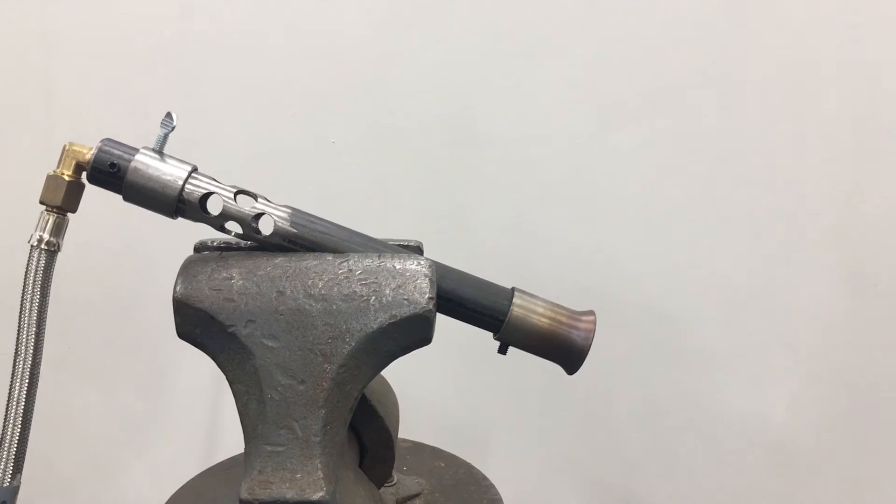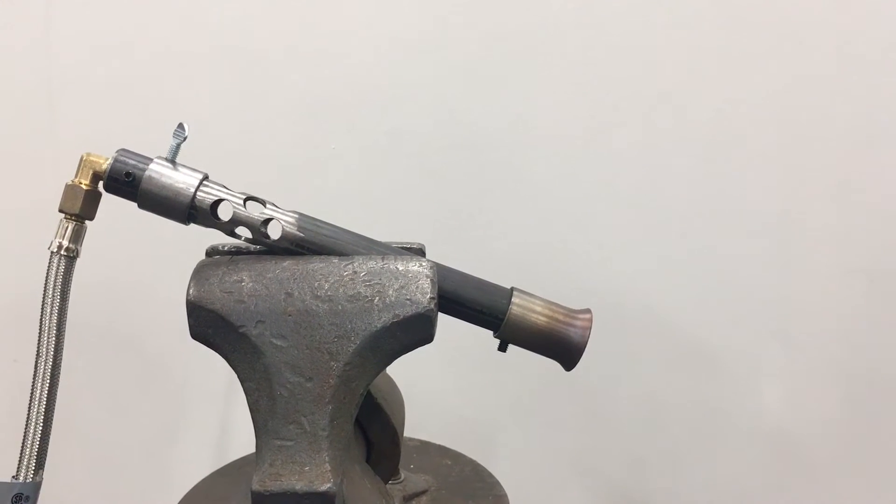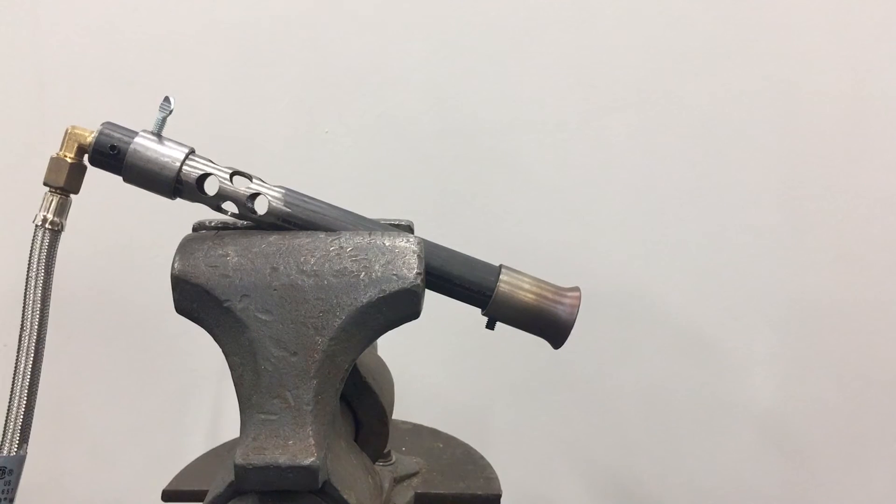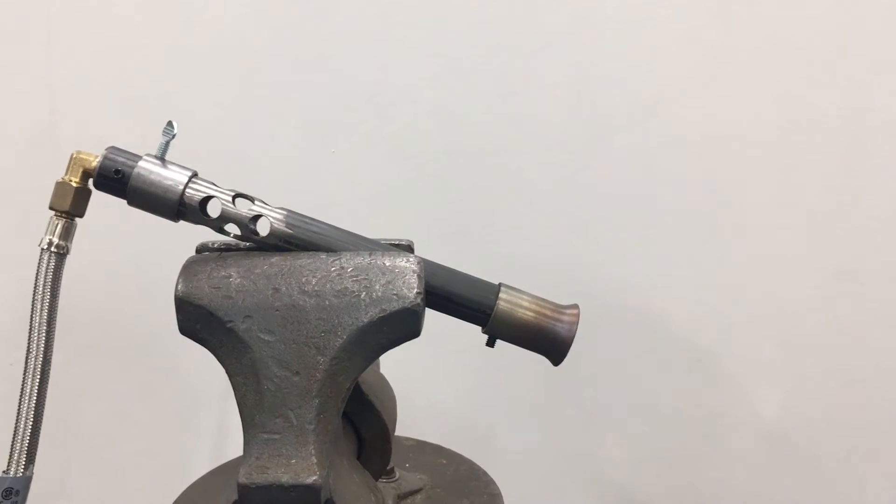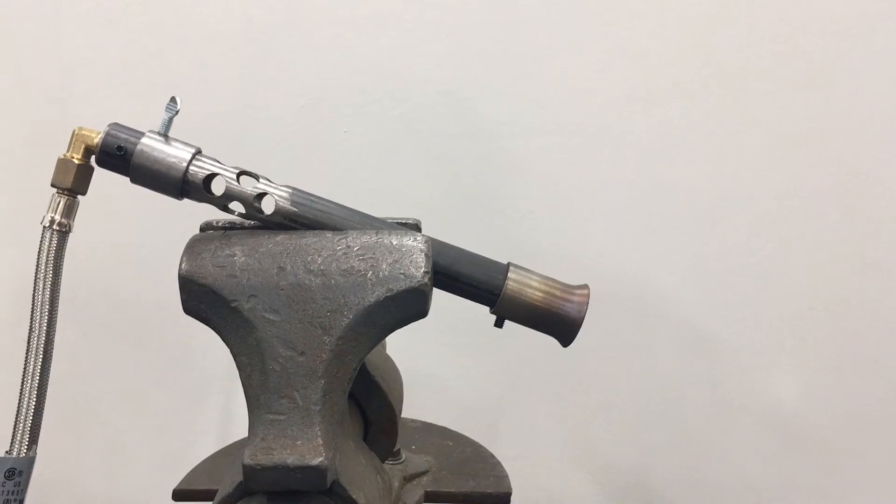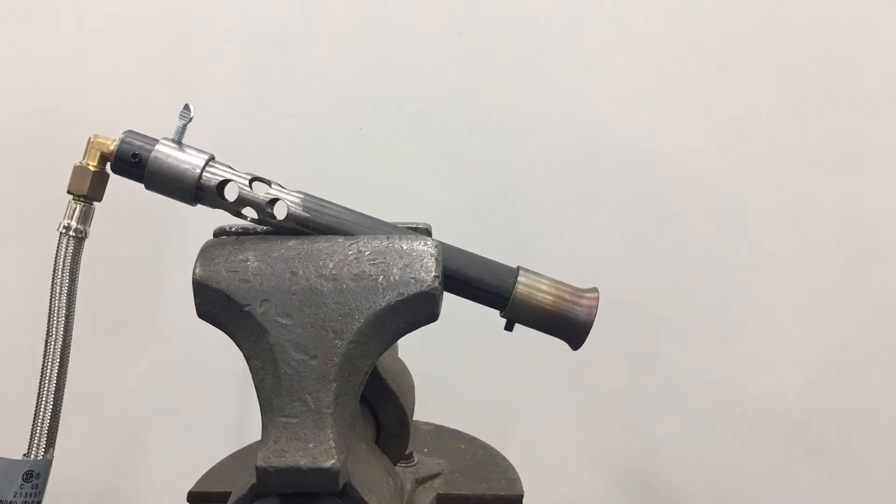It's very simple. We're going to turn up our propane regulator until we hear a hiss. Now that we've heard a hiss, I'm going to turn it one more turn and I'm going to light.